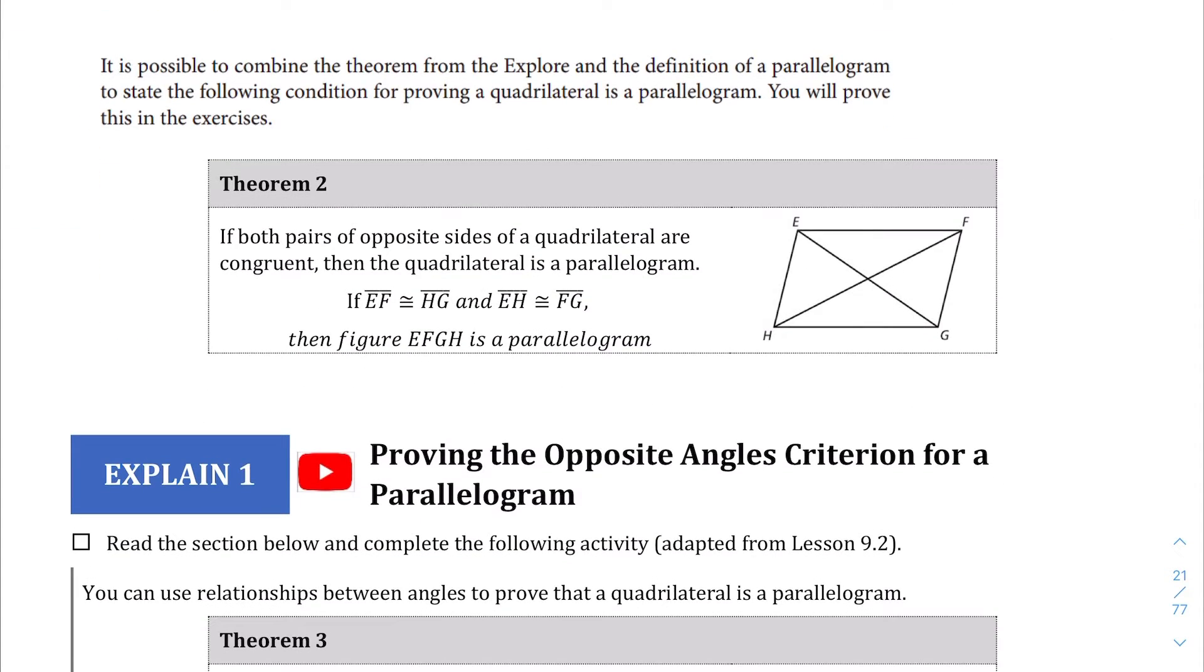Theorem 2 is the theorem that says that if both pairs of opposite sides of the quadrilateral are congruent, then the quadrilateral is a parallelogram. So if this is congruent to this, and if this is congruent to this, then no matter what, you're going to end up with a parallelogram.